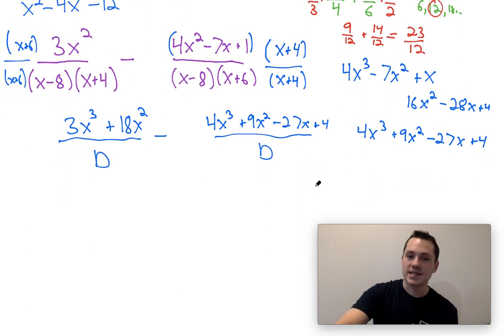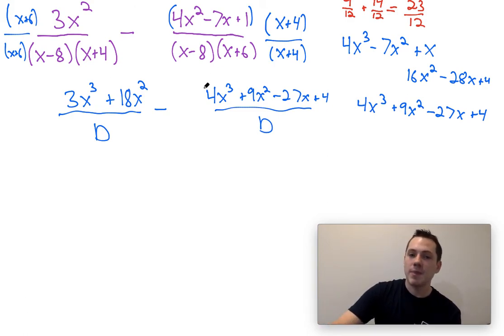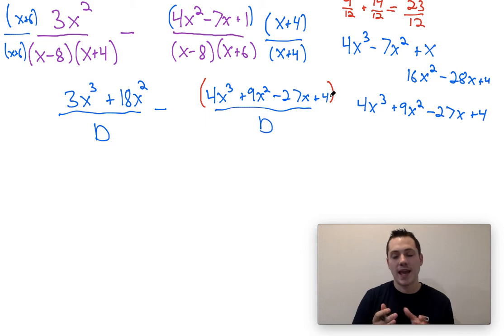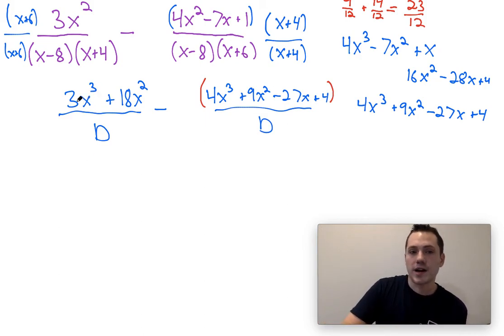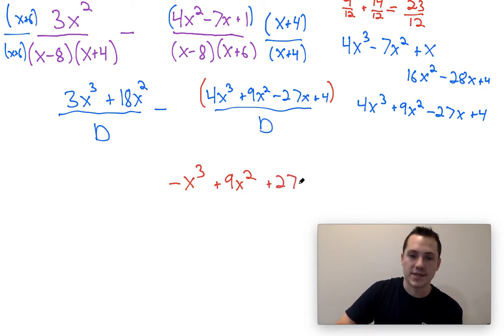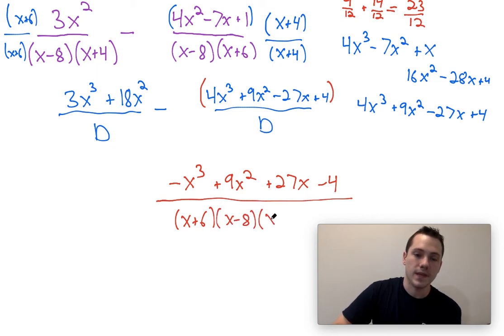Now, once we do this, we have to subtract one fraction from the other. And remember that I always call these implied parentheses the parentheses that exist in any numerator or denominator of a fraction, and you need to distribute across it. So when we combine this numerator, I need to do 3x³ - 4x³, which would give me -x³. I need to do 18x² - 9x², which would give me +9x². And then I don't have other terms, so it's just negative -27x, which is +27x, and negative +4, which is -4. And then over this whole denominator of (x + 6)(x - 8)(x + 4).